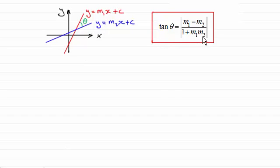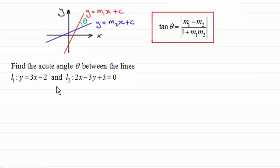Now, I'm giving you this formula here without any proof. Just want to show you how to use it. If you want proof of this, then do take a look at the next video. Now, here's an example you might like to try. We've got to find the acute angle theta between the lines L1 with equation y equals 3x minus 2, and the line L2 with equation 2x minus 3y plus 3 equals 0.